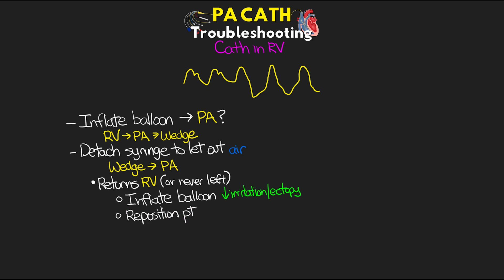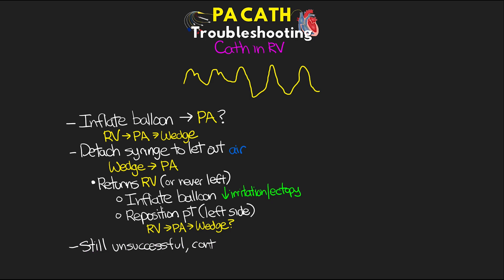From here, try repositioning the patient. Typically, having them lie on their left side is going to be the best position to assist with this natural floating. We want to be looking for that RV waveform changing to a PA waveform and then changing to a wedge, because at that point we need to remove the air from the balloon. If we're still unsuccessful, then contact the provider right away in order for them to reposition.